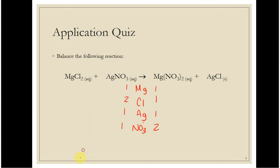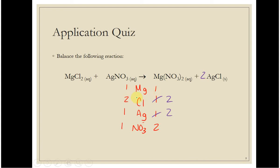So this is not balanced. I typically start at the top and work my way down. We've got one magnesium — I'm going to make it so that I have two chlorines. The only way I can do that is by adding a two in front of silver chloride. This two applies to both the silver and to the chlorine, so that makes two here and two here. Now magnesium is balanced and chlorine is balanced, but I need silver and nitrate to be balanced. To do that, I need two silvers and two nitrates, so I'm going to add a two here. This two applies to both the silver and to the nitrate ion, so I have two and two. Now we are balanced — one magnesium on both sides, two chlorines, two silvers, and two nitrates.